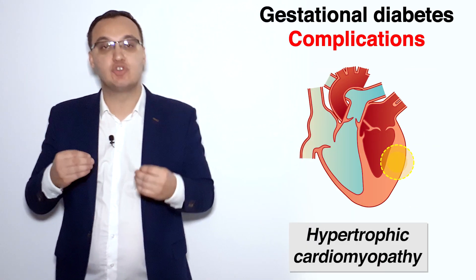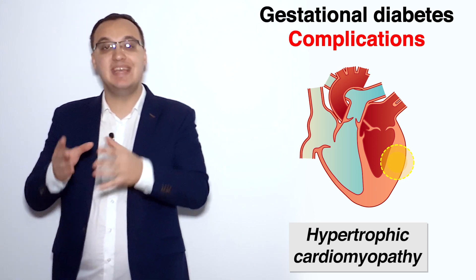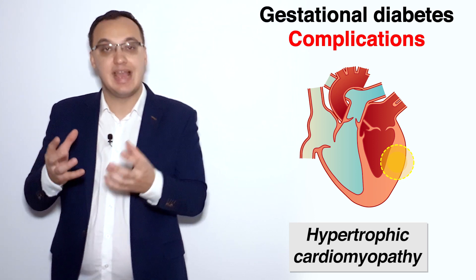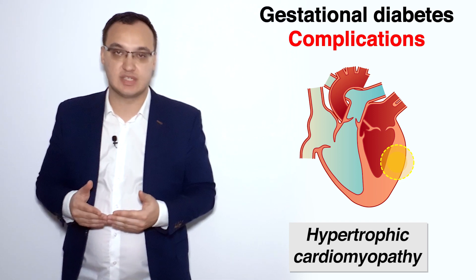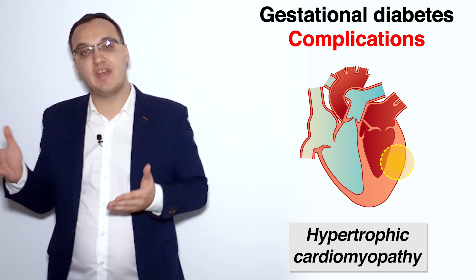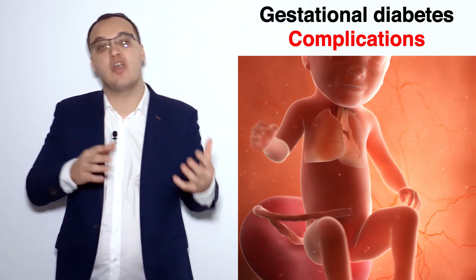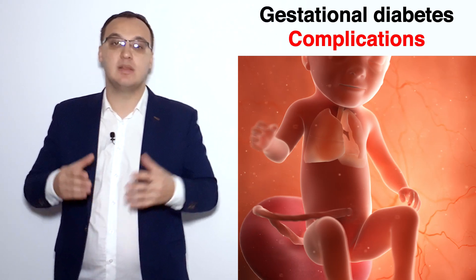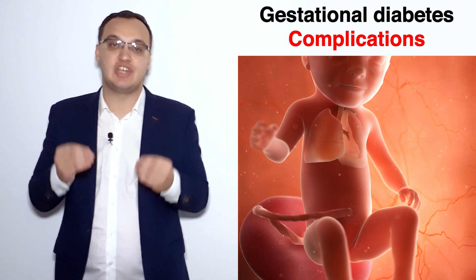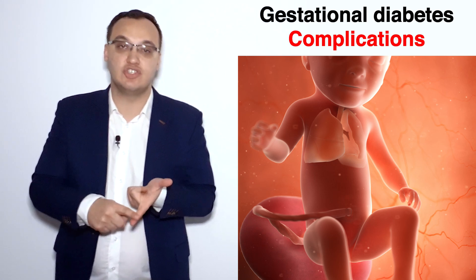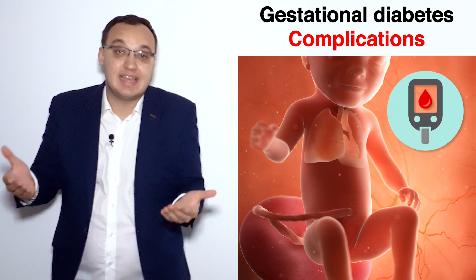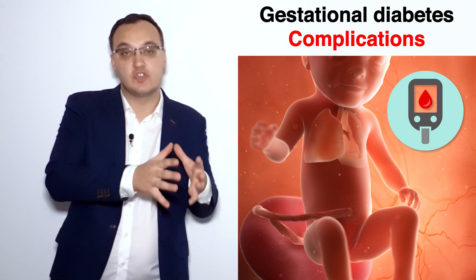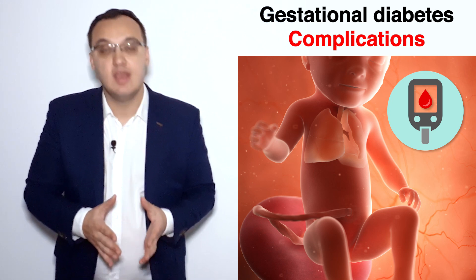Other complications include hypertrophic cardiomyopathy, meaning the baby's heart becomes enlarged and thickened, which is very dangerous. The baby can also have metabolic or respiratory complications — the child may not breathe normally and can develop metabolic complications like diabetes mellitus later in life, both as a neonate and in adulthood.